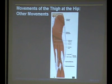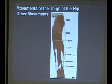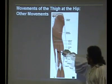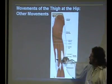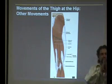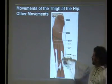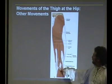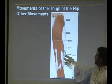They call it semitendinosus for a reason — because it's mostly like a tendon. They call it semimembranosus for a reason — because it's mostly like a membrane. Three-dimensionally, the semimembranosus is more like a thin sheet, whereas the semitendinosus comes down and forms more of a tendon.